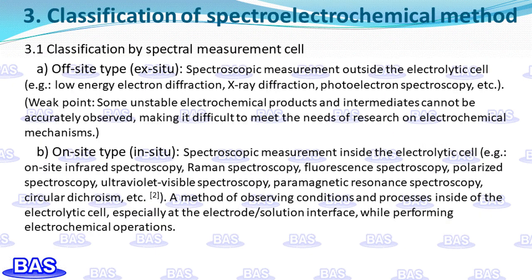Spectro-electrochemical methods are classified according to the spectrum measurement cell, which can be divided into ex situ and in situ. Ex situ is a method to investigate the electrode by spectroscopic measurement outside the electrolytic cell, such as low-energy electron diffraction, X-ray diffraction, and photoelectron spectroscopy. The disadvantage is that it is impossible to accurately observe unstable electrochemical products or intermediates, making it difficult to meet the needs of electrochemical mechanism research. In situ refers to spectroscopic measurement carried out inside the electrolytic cell to observe the electrode-solution interface during electrochemical operation, such as on-site infrared spectroscopy, Raman spectroscopy, fluorescence spectroscopy, polarized spectroscopy, ultraviolet-visible spectroscopy, paramagnetic resonance spectroscopy, and circular dichroism.